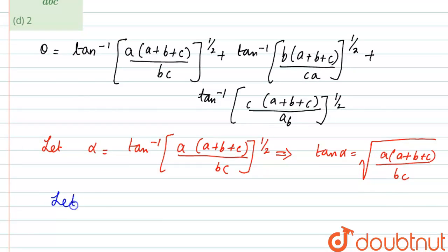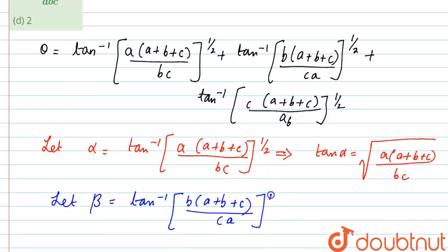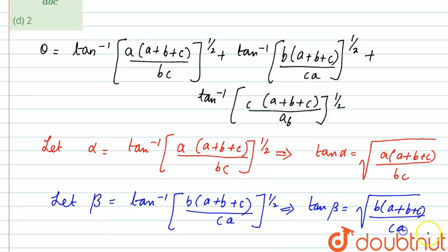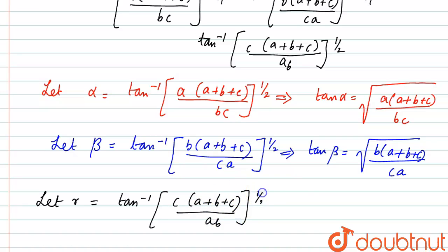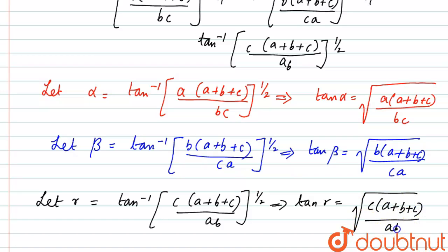Similarly, let beta equal to tan inverse of B·(A+B+C)/CA raised to the power half, so tan beta equals square root of B·(A+B+C)/CA. Also, let gamma equal to tan inverse of C·(A+B+C)/AB raised to the power half, so tan gamma equals square root of C·(A+B+C)/AB.